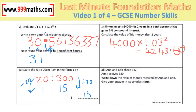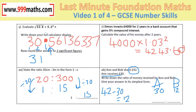Finally, two people sharing money: the total is given and one person's amount is given. Anne gets £30 and Bob therefore gets £12, because 42 minus 30 is 12. Now simplify: divide both by 6 to give a ratio of 5 to 2. That's the end of this video — I hope you found it useful. Please check out the other ones and good luck with your last minute revision.